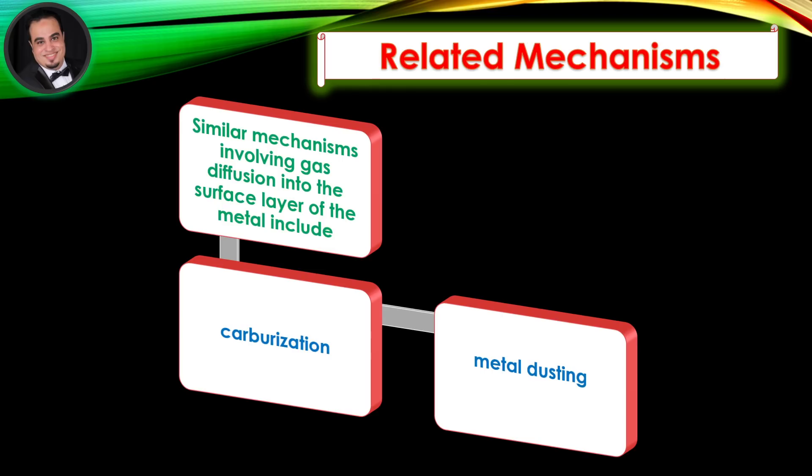Related mechanisms: Similar mechanisms involving gas diffusion into the surface layer of the metal include carburization and metal dusting.